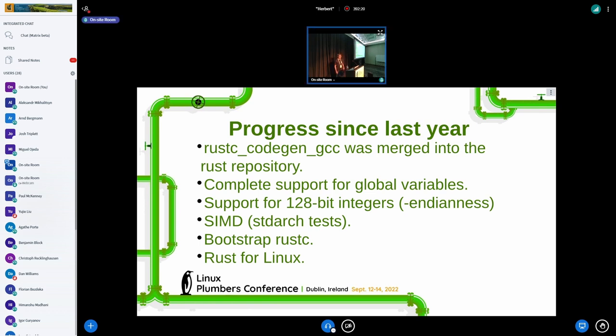So I'm going to present to you what is the progress that was made on this project since last year. So as I mentioned earlier, it was merged in the main Rust repository. We now have complete support for global variables. It used to be hackish as it initialized them at runtime, but now they are initialized in static memory. So that's fixed a couple of bugs in the tests.